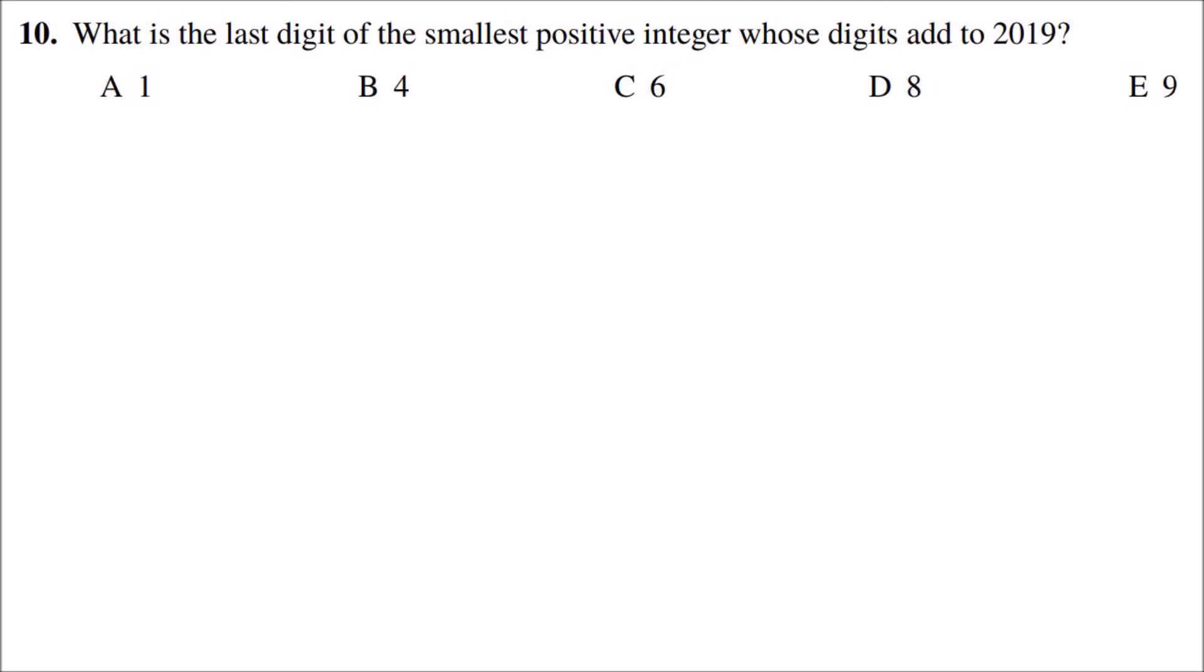First of all, to have the smallest possible integer, you have to use the least amount of digits possible, because for example, a thousand is bigger than 999 because it has four digits instead of three.